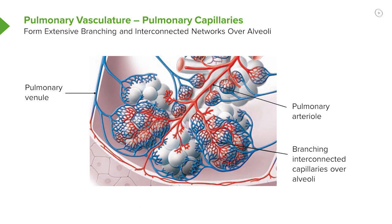At the alveoli, the pulmonary arterioles form the pulmonary capillaries, which form a plexus around the outside of the alveoli, covering about 70% of the alveolar surface.